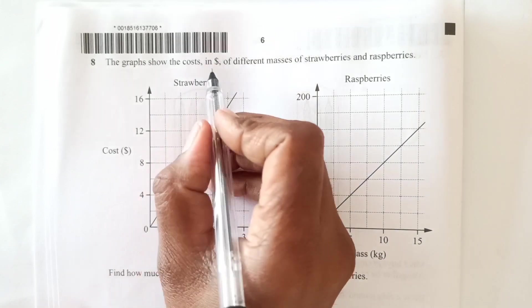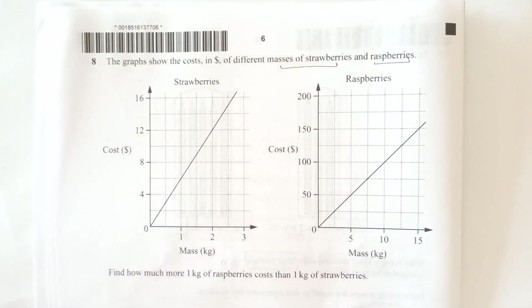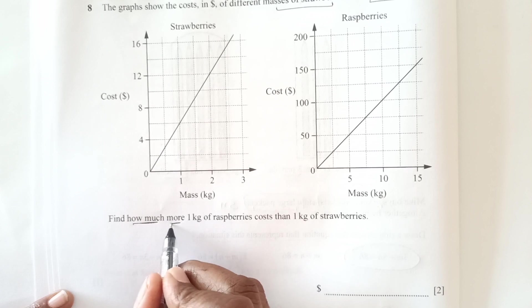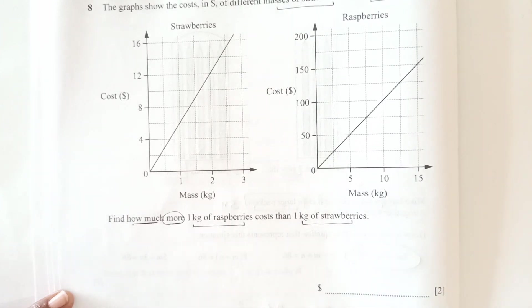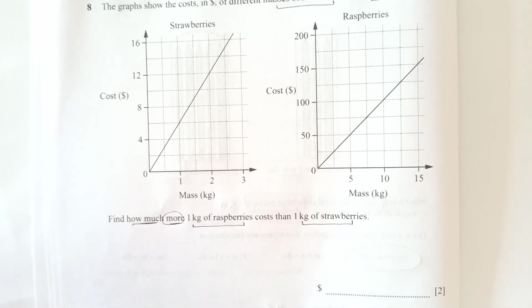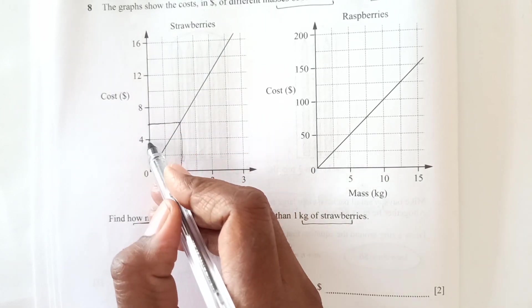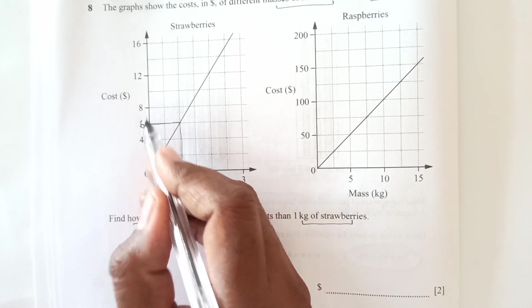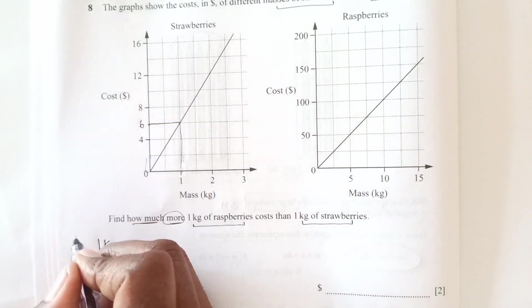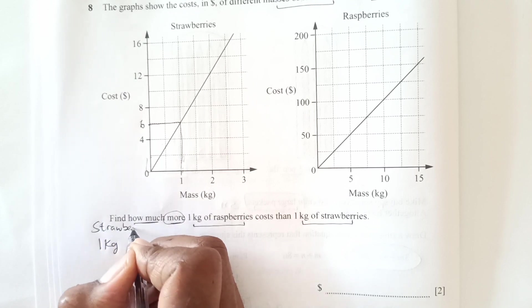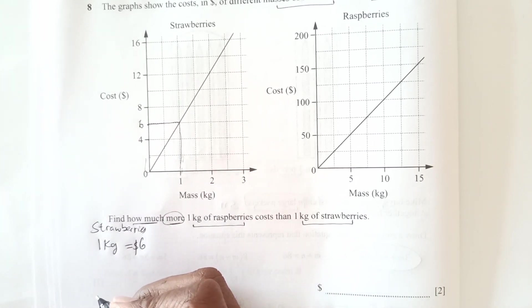Question number 8. The graph shows the cost in dollars of different masses of strawberries and raspberries. This is strawberry here. This is raspberry here. Find how much more, you see, remember how much more 1 kg of raspberry cost than 1 kg of strawberries. So we need to have the cost of both for 1 kg. So 1 kg of this strawberry. 1 kg of strawberry if you go along this way it is in the middle. So this is 4, 6. So this is going to be 6 and 8. So 1 square represents 2. So 4 and 2, 6. So 1 kg, this is the strawberry. 1 kg of strawberry cost 6 dollars.